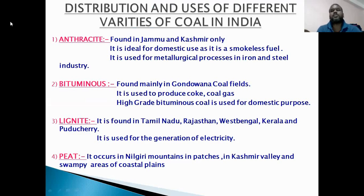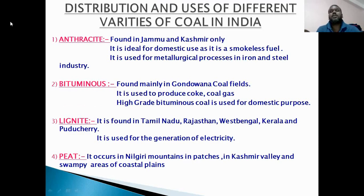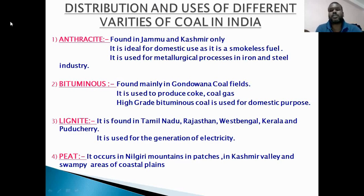Distribution and use of different varieties of coal in India. Anthracite is found in the state of Jammu and Kashmir only. It is ideal for domestic use as it is a smokeless fuel, and it is also used for metallurgical processes in the iron and steel industry. Bituminous coal is mainly found in the Gondwana coal fields in the peninsular region of India, and is used to produce coke and coal gas. High-grade bituminous coal is used for domestic purposes.